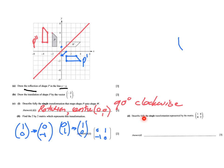The final part asks you to describe fully the single transformation represented by a particular matrix — but I'm not going to cover it because stretches have been taken out of the syllabus. Just to give the answer: it's a stretch with scale factor 2 and invariant line the x-axis. You only need to know reflections, translations, rotations, and enlargements now.